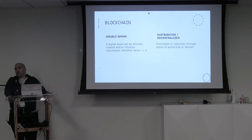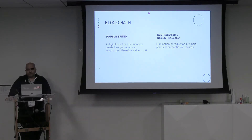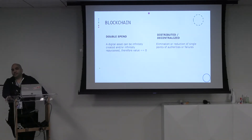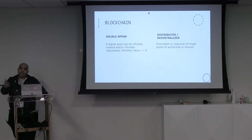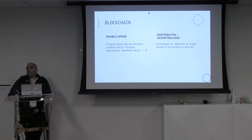This is profound. There are significant implications for us as a society and civilization because double spend has been solved from a digital point of view. Just like the information age of the internet changed how we do communication and e-commerce, blockchain is going to change how we do e-commerce again — how we trade and represent the assets we trade. We can now trade digital assets. The other aspect of blockchain is it attempts to eliminate the middleman, or decentralize the system, identifying a single point of authority or failure and trying to eliminate that.